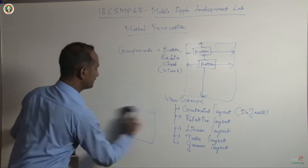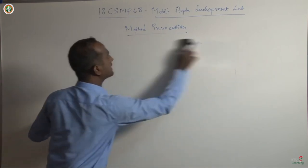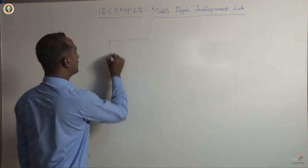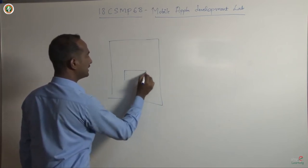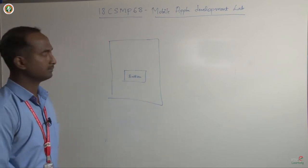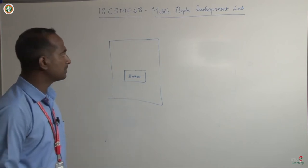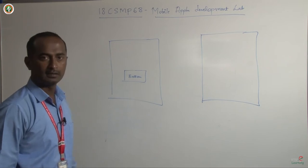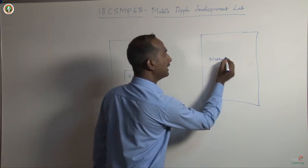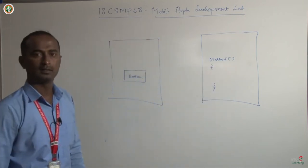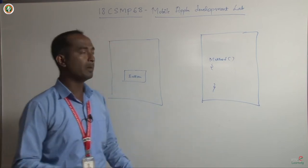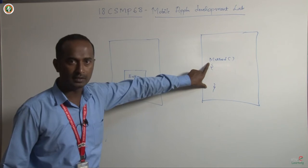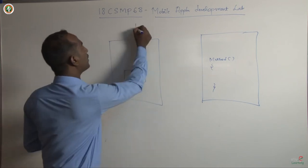Now I will discuss method invocation with a simple example. In my design, I have a button, and I need to add logic to it. A corresponding Java file is created whenever you create a project. Whenever I click on this button, the method written in Java should be invoked — that is what we call method invocation. A method is a set of code enclosed within curly braces that performs a particular task.